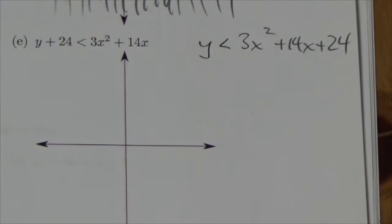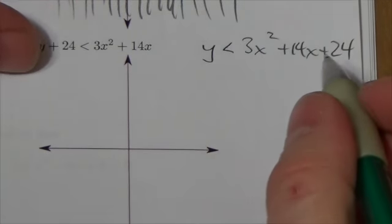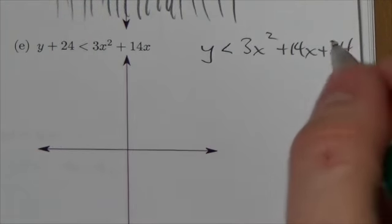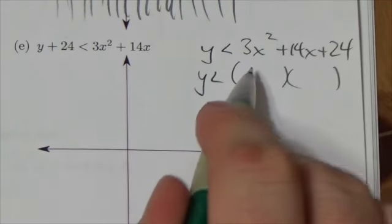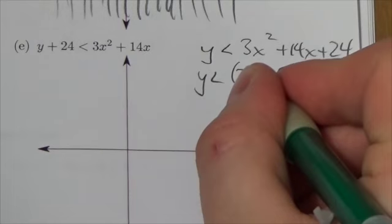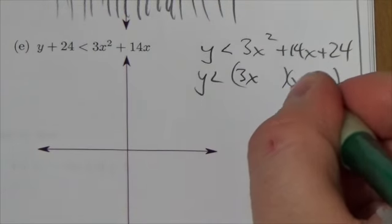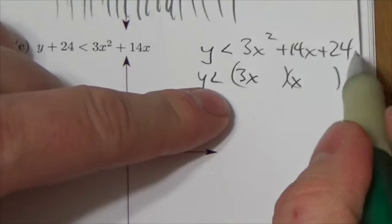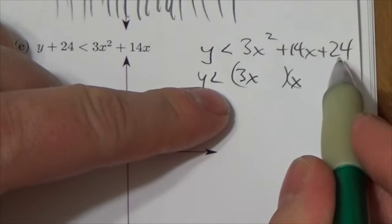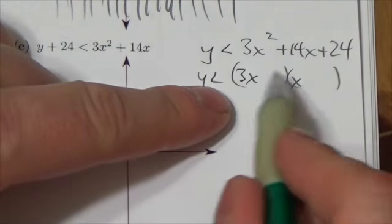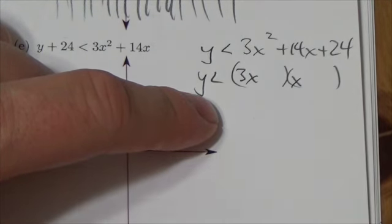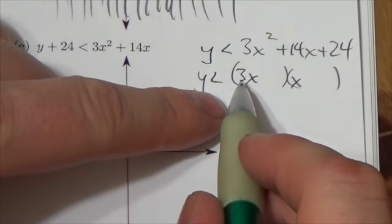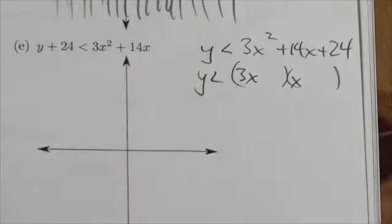And so what I'm going to do here is try to find the x-intercepts by factoring this. So now I'm just going to do a quick little guess and check on this one because that 3 there tells me that the leading coefficient in that binomial has got to be 3. Over here it'll just be x. And then I'm looking for factors of 24 that when I put them out here using that 3, I'm going to add them together and get the 14 out of that. So I'm just going to think here, factors of 24, let's say 4 and 6.